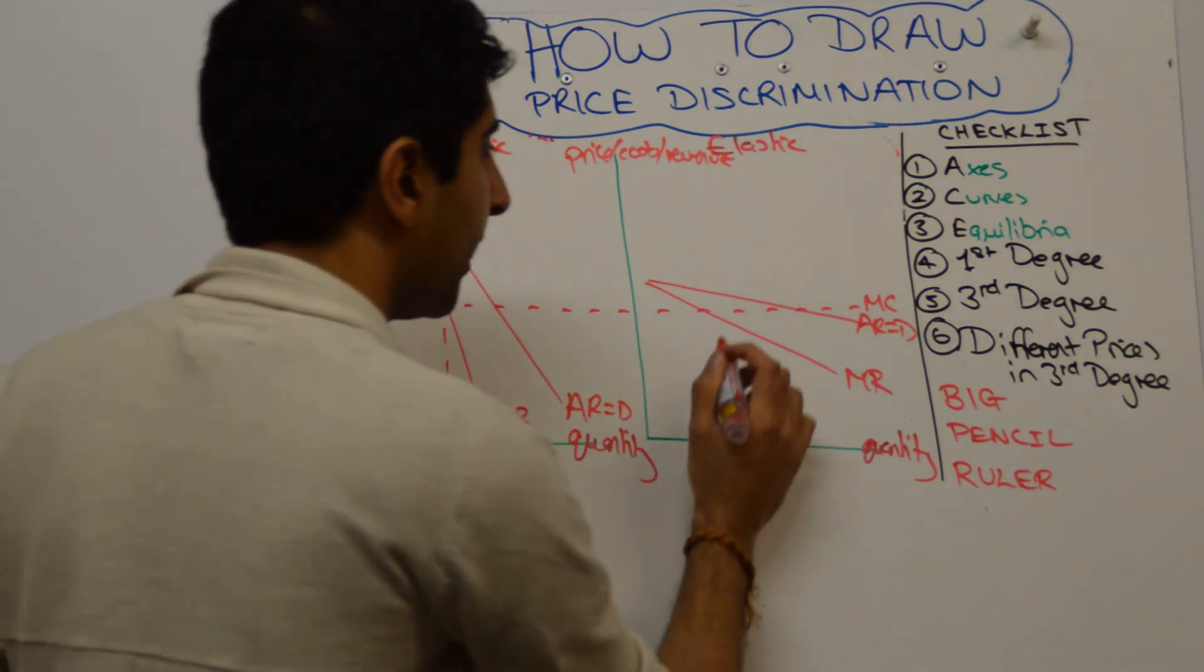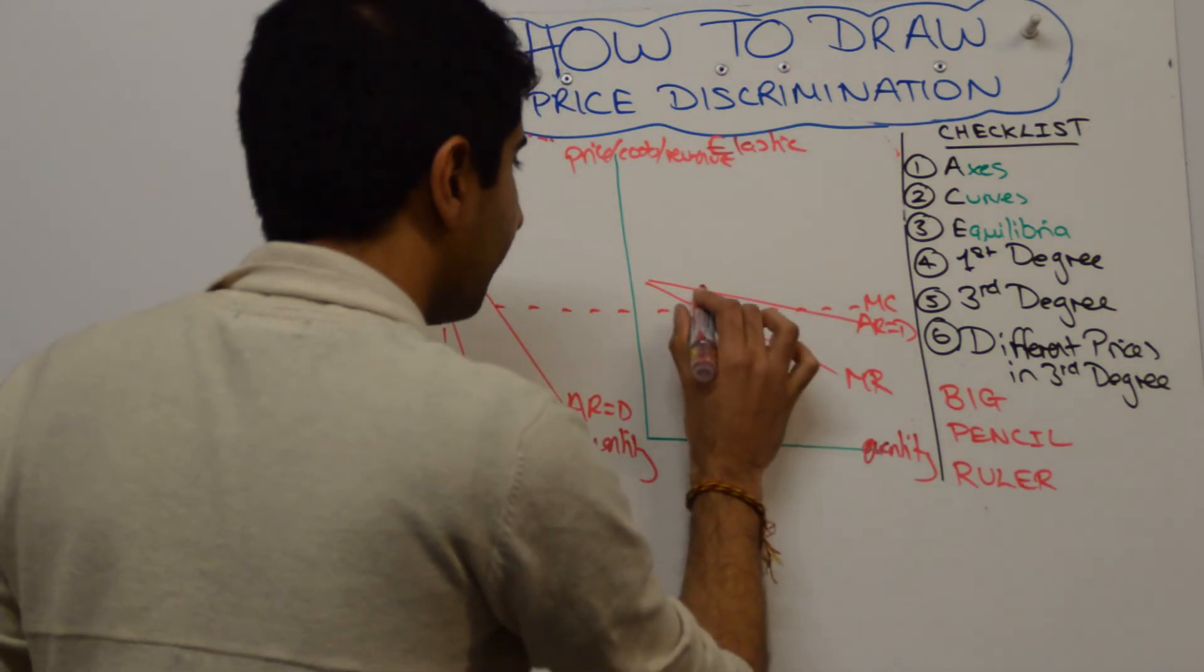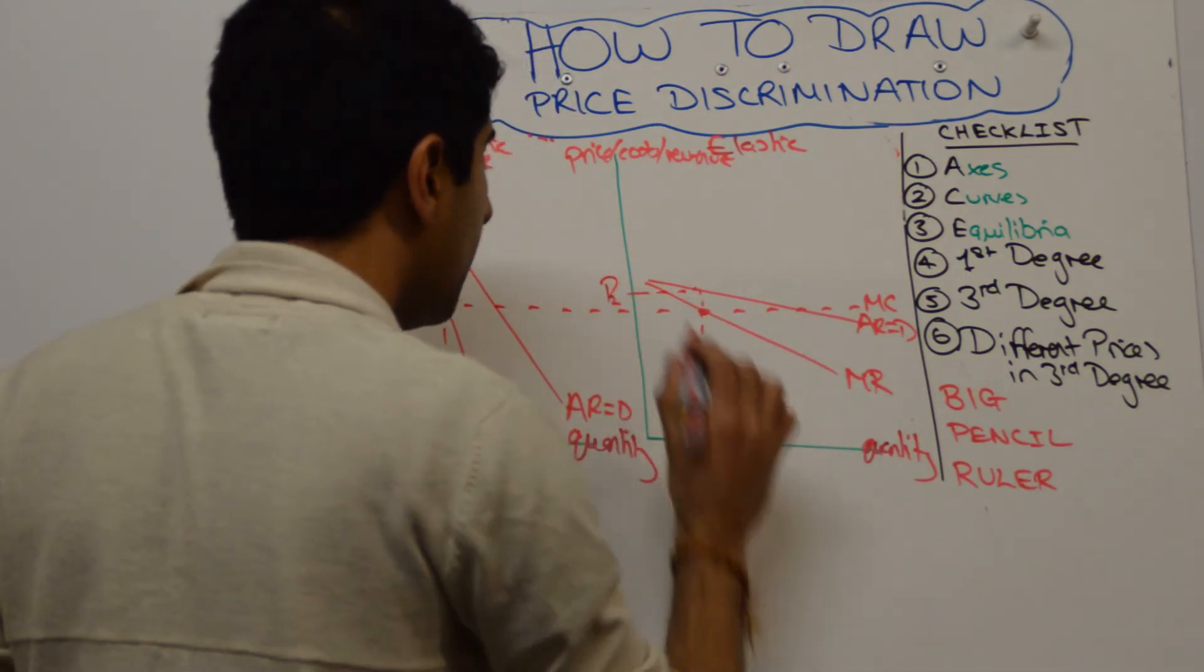Do the same in the off-peak market, where MC equals MR is there. Let's call that Q2. Read the price off the AR curve and call that P2. And you made the point.